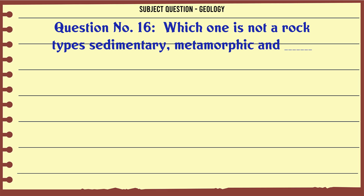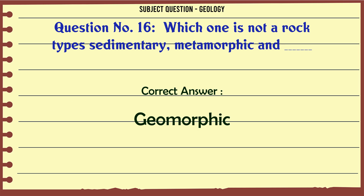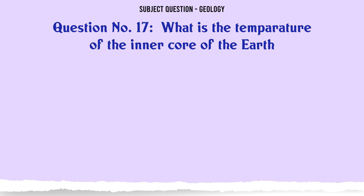Which one is not a rock type — sedimentary, metamorphic and ___? A. Igneous. B. Sedimentary. C. Metamorphic. D. Geomorphic. The correct answer is Geomorphic.